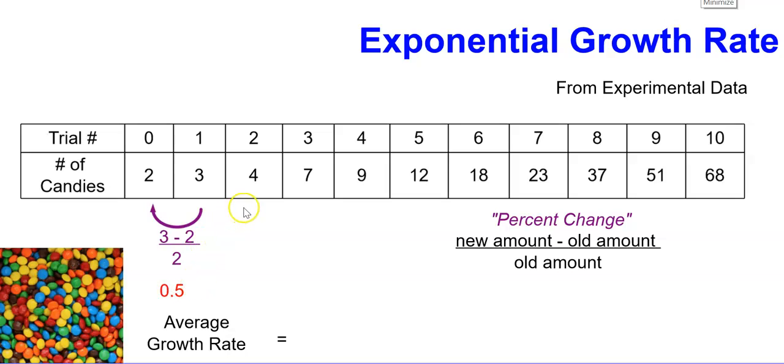Then do that for the next one, from 4 to 3. The difference of 4 minus 3 divided by the original amount, which was 3 in that case.